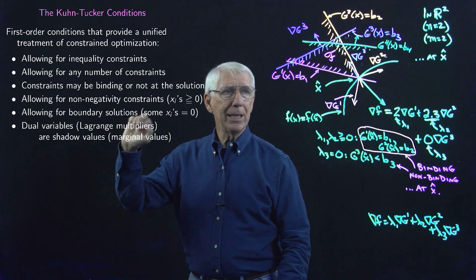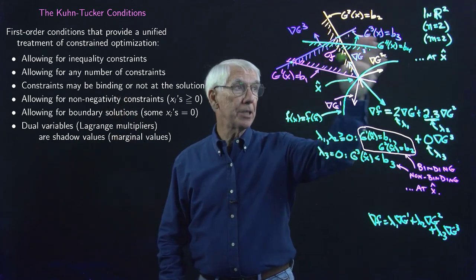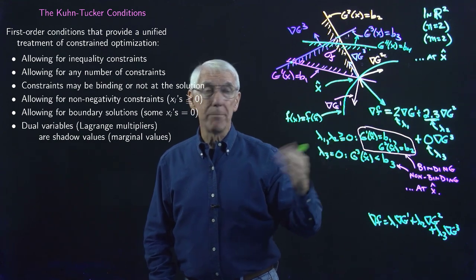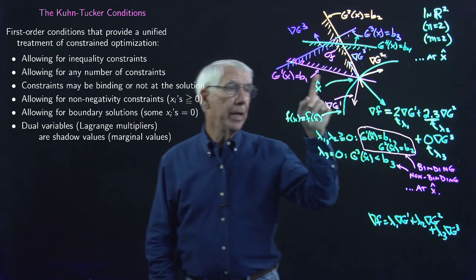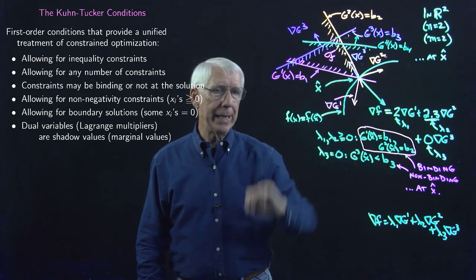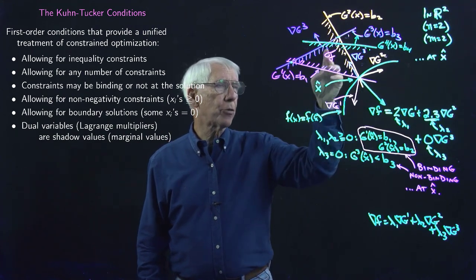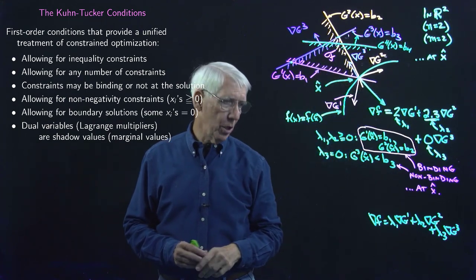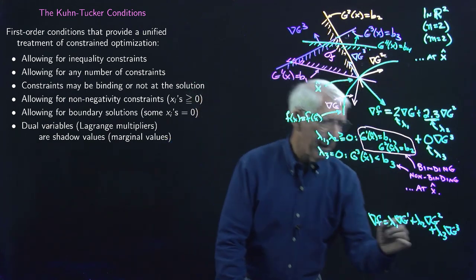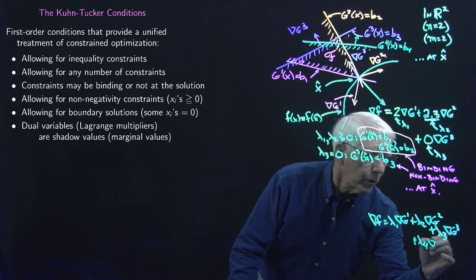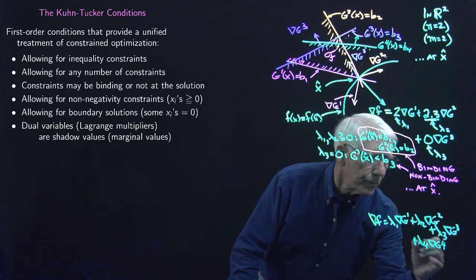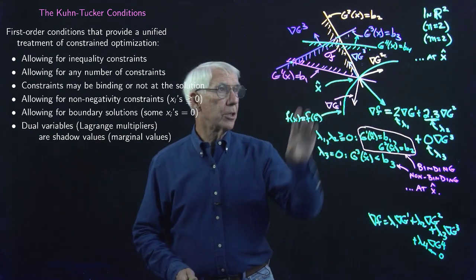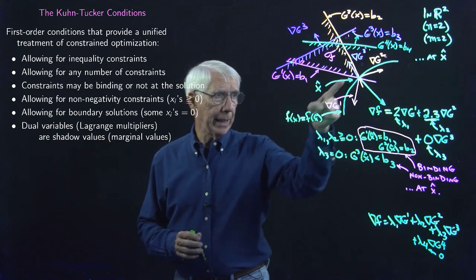It says constraints may be binding or not at the solution, and once we've got these additional constraints, it's going to have to be the case that some constraints can be non-binding. Here, constraints one and two are binding at the solution, constraint three is not binding, and obviously constraint four is not binding at this solution either. So I would have plus lambda four times gradient G4, but lambda four would have to be zero, because constraint four is not binding at the solution.